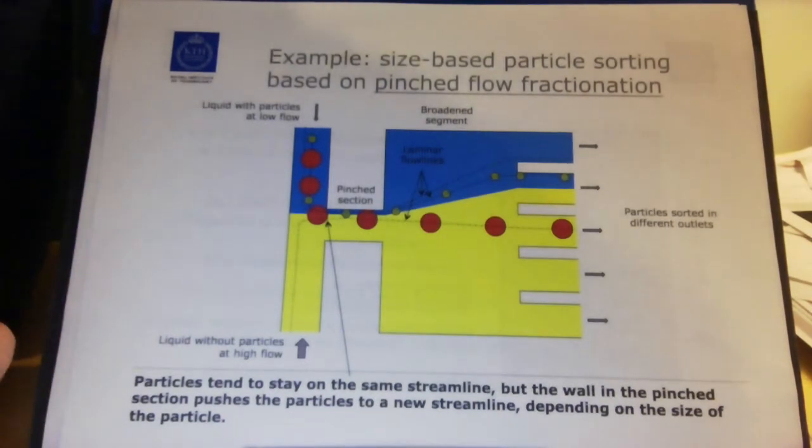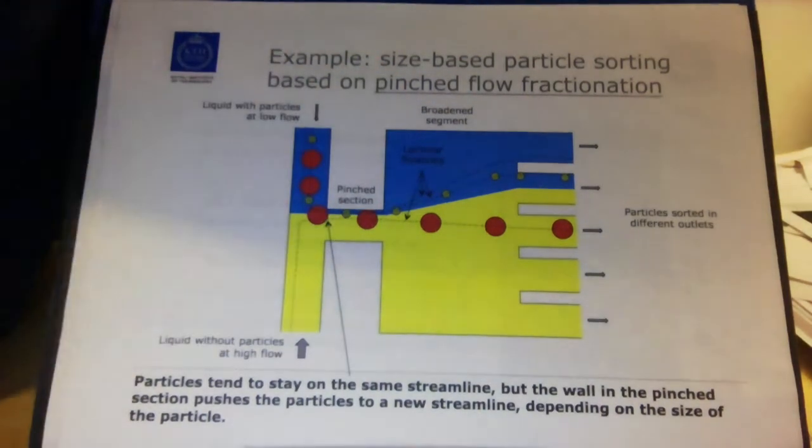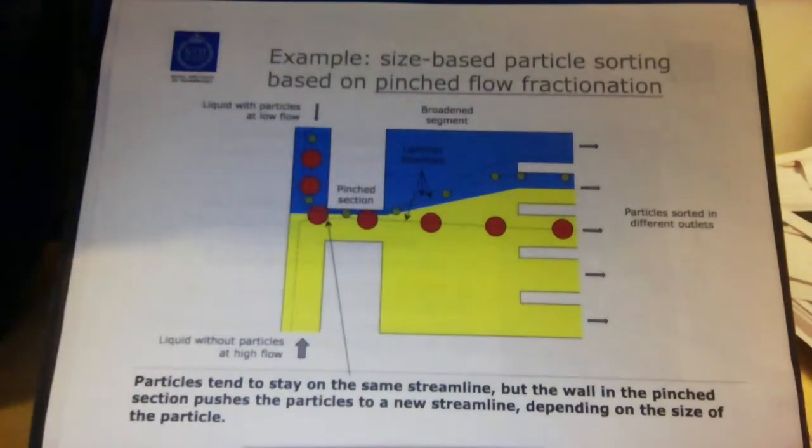And what I want to do with this device is that I want to split. I want to have several outputs, so I have one input for my main flow and I want to have several outputs. And I want to have each of the outputs have a particle with a different size. So I want to size-sort the particles in my flow that are mixed.